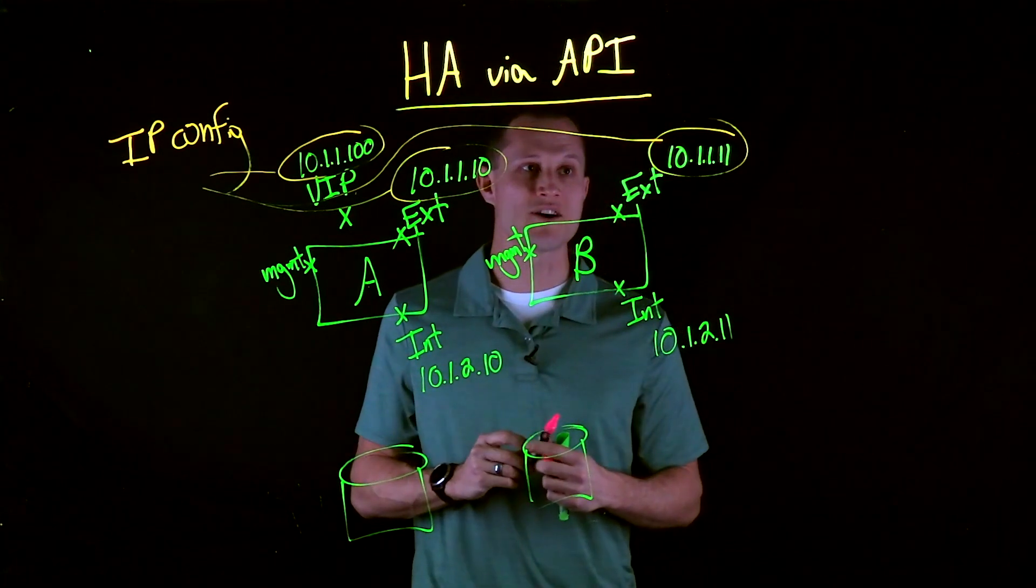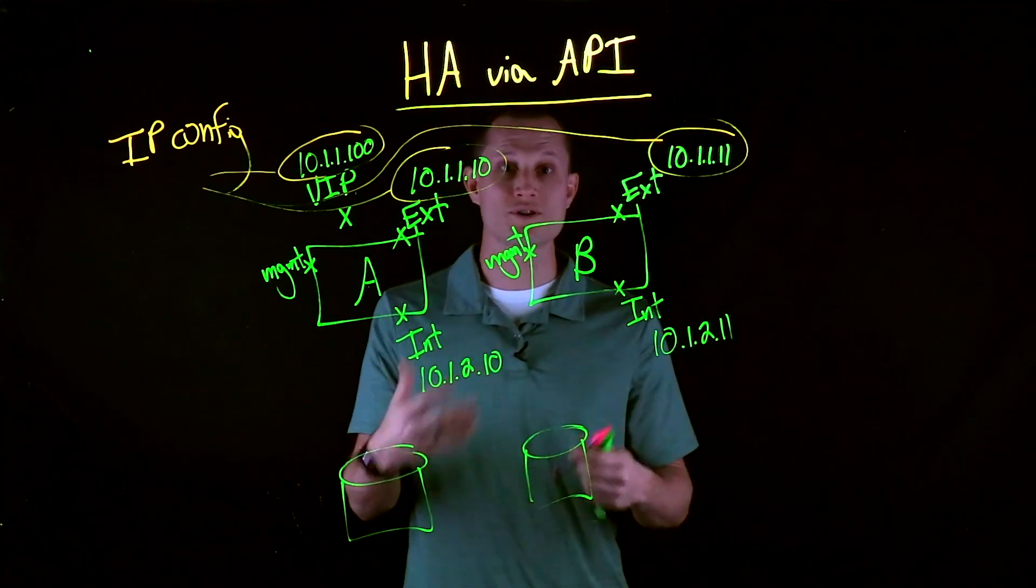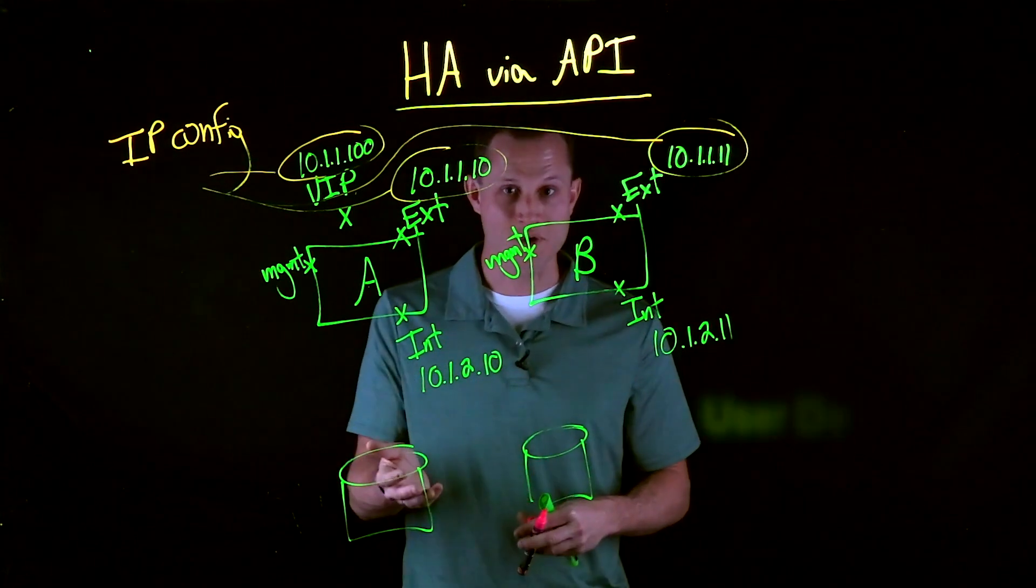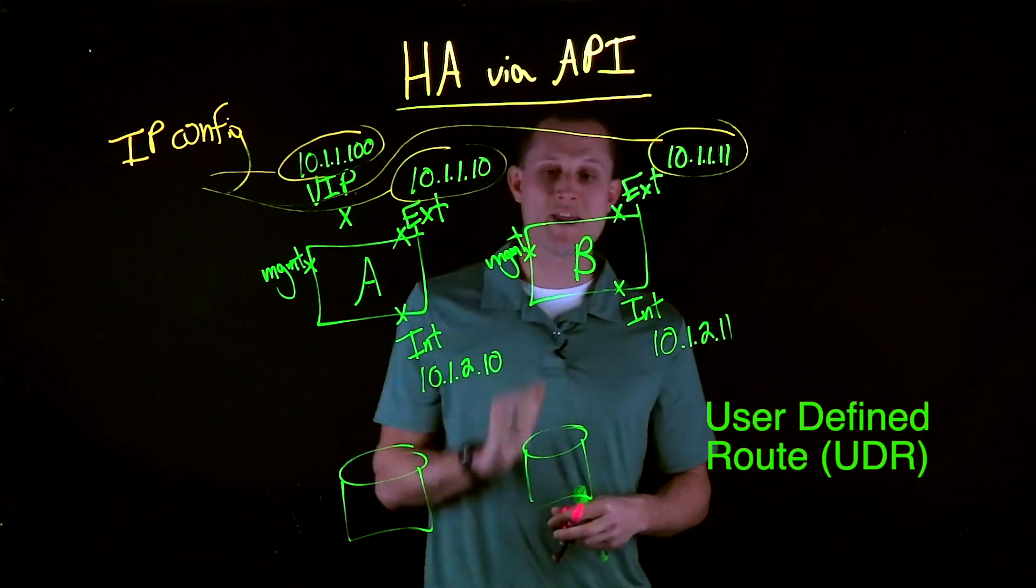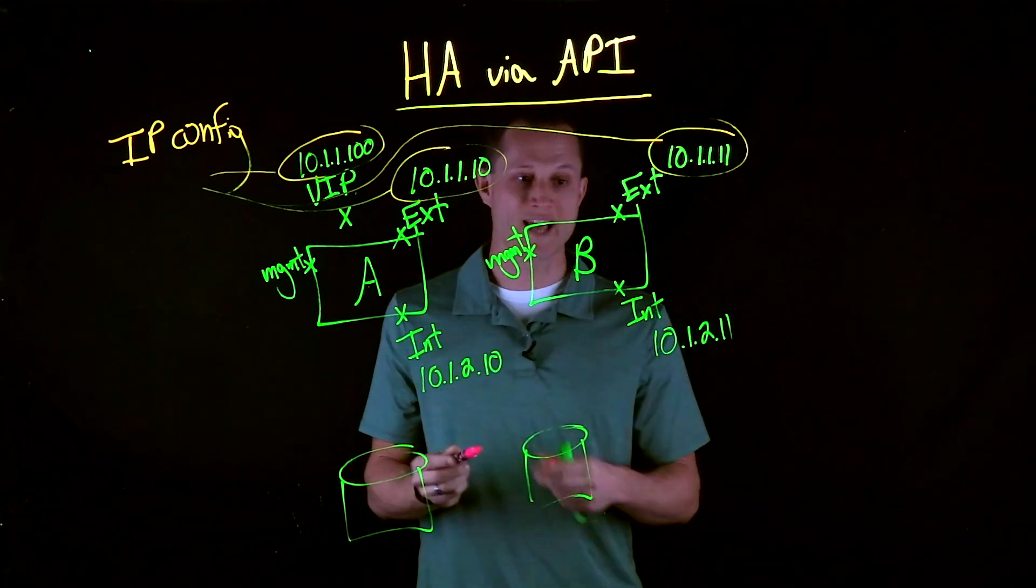One thing that I want to talk about, too, is in case your servers need to see the real client IP. What we want to do is make use of UDR route failovers. And via the API method, we're able to also float over UDR routes. And what does that mean?